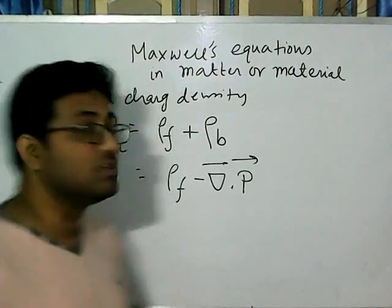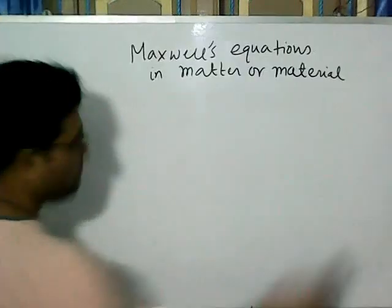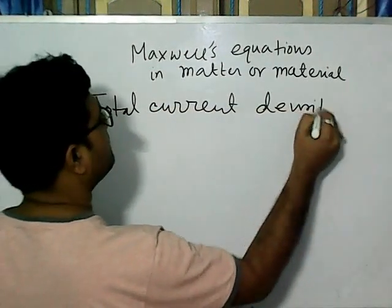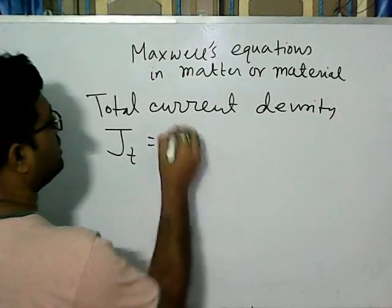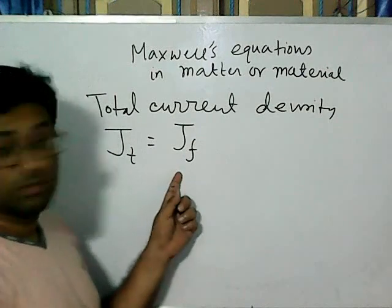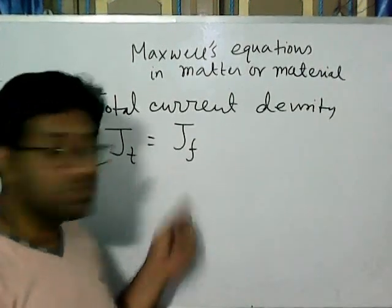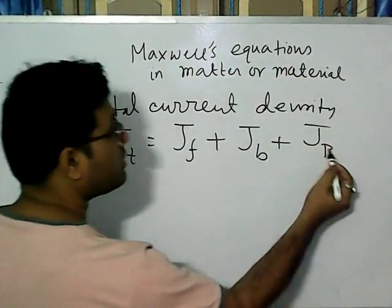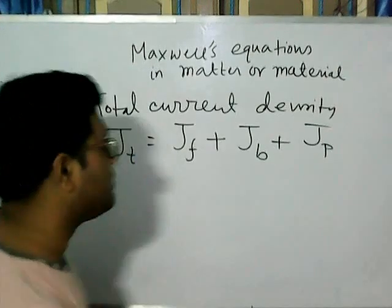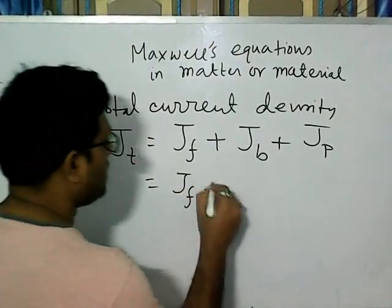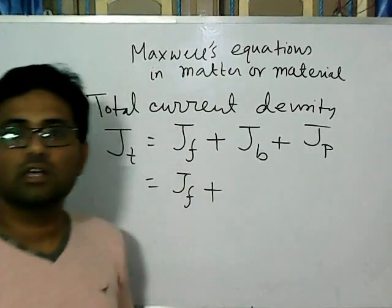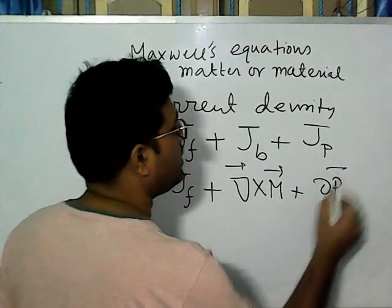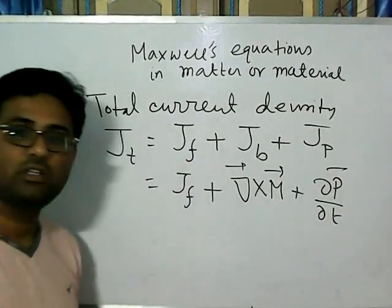Now let's see what is the total current density. The total current density J_T equals J_F (the free current density) plus J_B (bound current density, which is curl M from the last class) plus J_P. J_P is del P/del t — let's see how that comes about.